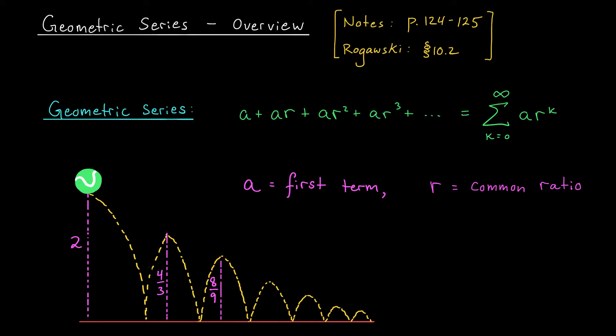So what is a geometric series? Well, it has a very particular form. It starts with some initial term, a, and then to get the later terms, you multiply that a by a constant r over and over. So the next term would be ar, then ar squared, ar cubed, and so on. r is the common ratio between consecutive terms. So if you take any term and divide it by the term that came before, you get r back.